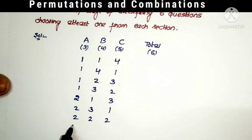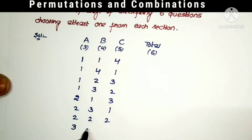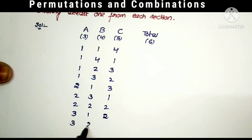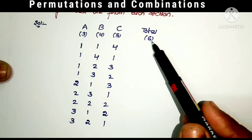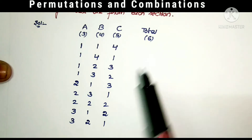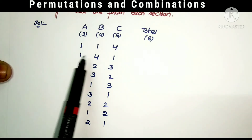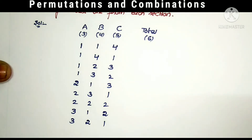If I select 3 questions from the first section, then we have to select 3 questions from the remaining 2 sections. The possibilities are: (1, 2) and (2, 1). These are all the total possibilities for selecting 6 questions such that at least 1 is chosen from each section.